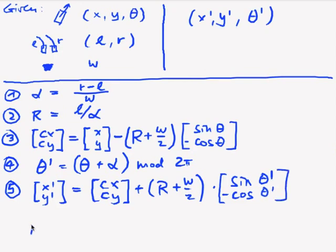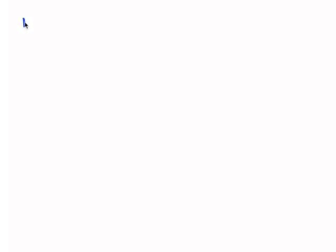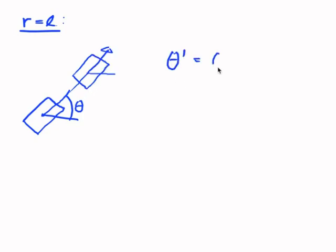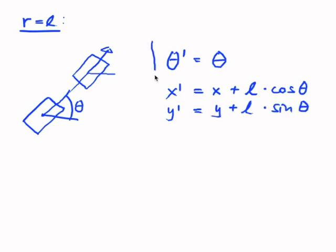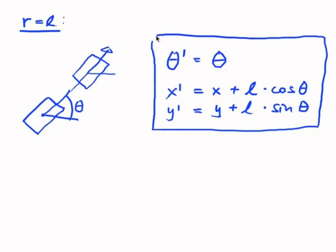Now the second case, if r equals l, that's actually much simpler. So our robot is here, it has this heading, and if r equals l, it just moves straight. So it ends up here. It is easy to find out the formulas. Our theta prime is just theta, because we didn't change our heading. Whereas our x prime, well that's the old x, plus the distance we drove. And I'll write l here. Now since l is equal to r, you can also write r times the cosine of theta. And y is the same using the sine. So this is the second set of formulas, which we need when the robot goes straight.